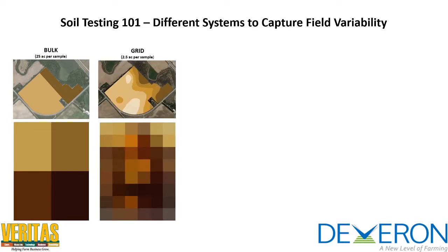Starting in the early 1990s, we started doing grid sampling. What grid sampling does is basically subdivide the field into smaller samples, and each spot is sampled separately. The data comes back from the soil lab, and there is software that takes all this data and attempts to interpret it and overlay what the computer thinks your field is going to behave like. There are some variations, and you can have different sizes of grids.